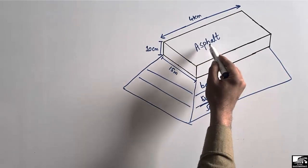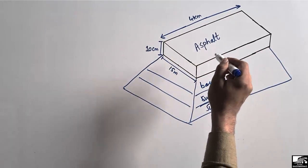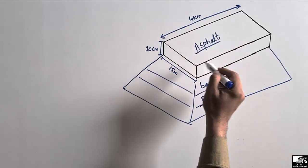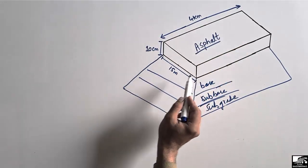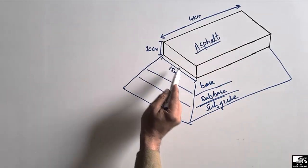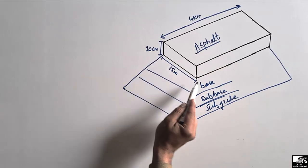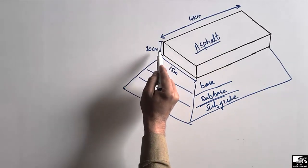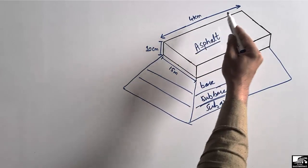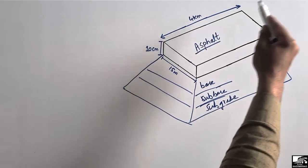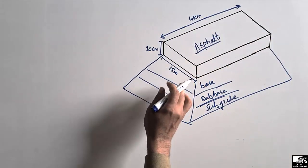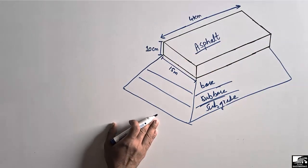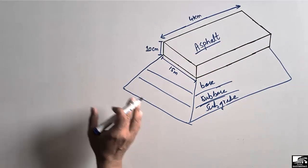On top of these layers, we place the asphalt layer. We are interested to find the quantity of asphalt in this flexible pavement. The given dimensions are: 15 meters is the asphalt breadth, 10 centimeters is the thickness of the asphalt, and 4 kilometers is the length of the asphalt road.